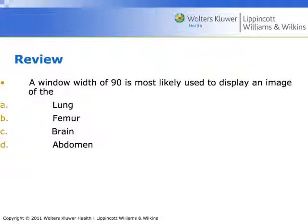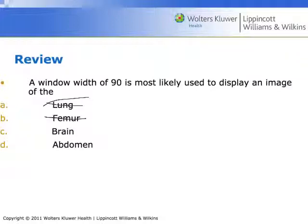Here is a review question: a window width of 90 is most likely to be used to display an image of which anatomy? We mentioned lung would be in a negative window level, so it's not lung. Femur would be at a really high window level because it's bone, so it's not that. So now we have a choice between the brain and the abdomen. The dominant structure in the abdomen, the liver, has a Hounsfield unit of 60 — that's not in the range of a width of 90 centered there. The answer is the brain, because brain tissue is more dense than most of the structures in the abdomen.